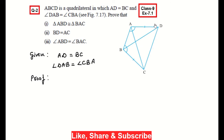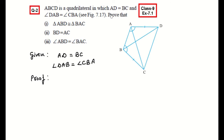See the figure given. ABCD is a quadrilateral in which AD is equal to BC — this side — and angle DAB is equal to angle CBA — this angle. These two are our given conditions. We have to prove the first part: triangle ABD congruent to triangle BAC. So from given, AD is equal to BC and angle DAB is equal to angle CBA.